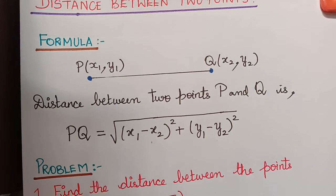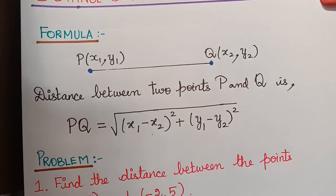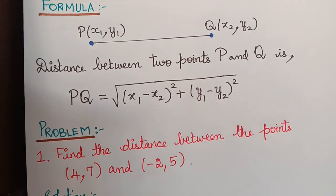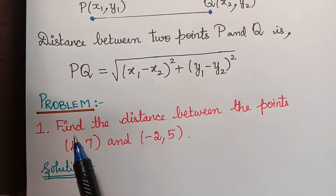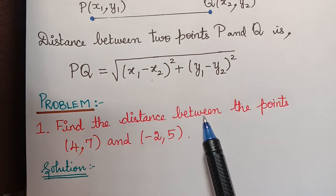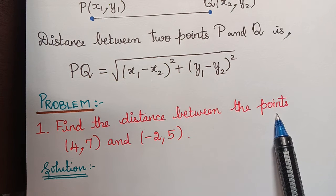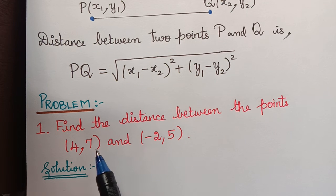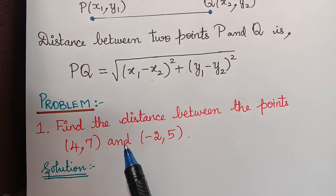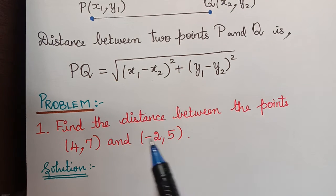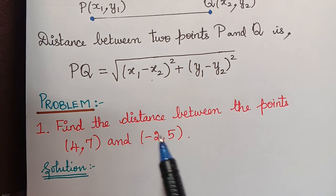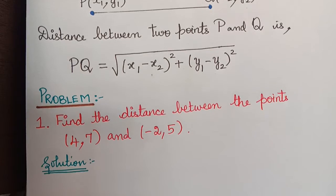So let us learn this with the help of a problem. Here we have a question which says: find the distance between the two points 4 comma 7 and minus 2 comma 5.